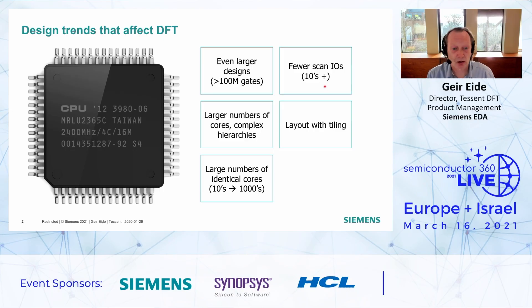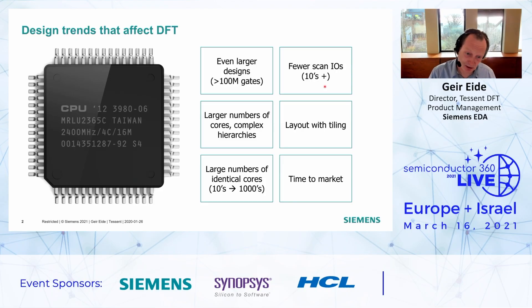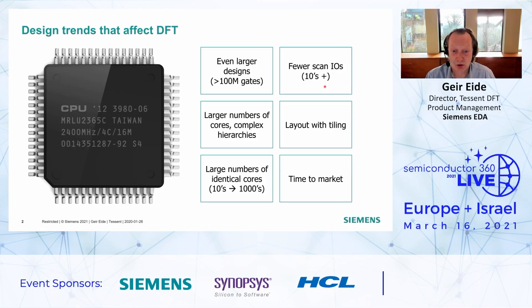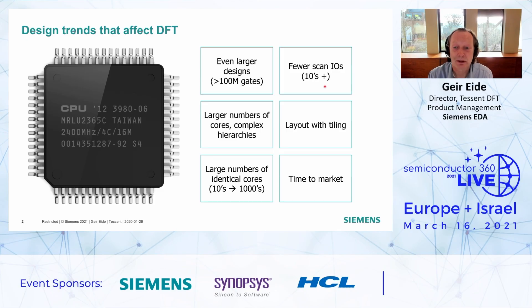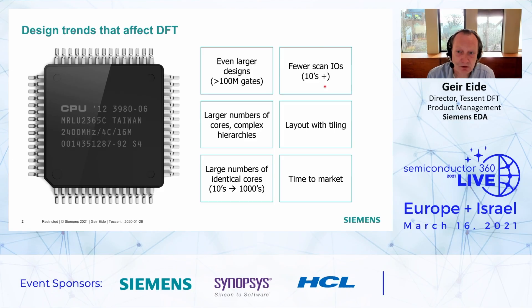Any hot new segment right now is AI. Time to market is an especially important factor — it's always a race to be first and a dominant player in new markets. You don't want DFT to be in that critical path. So what do these trends really mean to DFT?